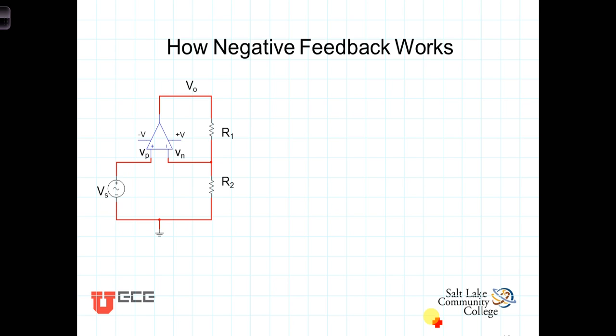We've pointed out that an op-amp is designed as a high-gain device such that Vout is equal to some A, some really large number, times the difference between V sub P and V sub N. A is on the order of 10 to the 5th, say 50,000, 100,000, or something like that.